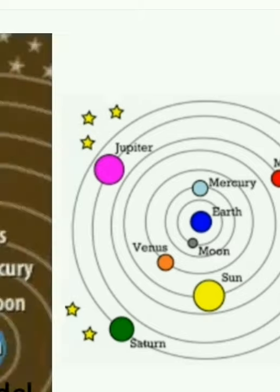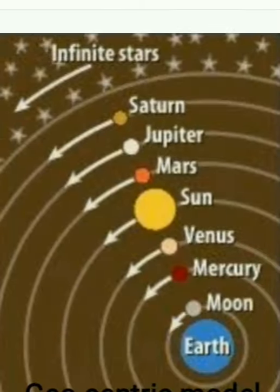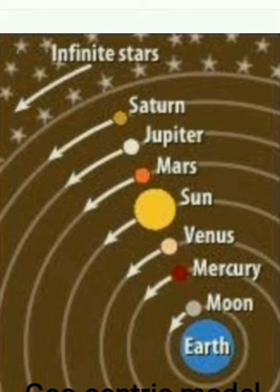Because we already learned that geocentric model means earth is at the center. The sun, the moon and planets were orbiting the earth. This was known as geocentric model.